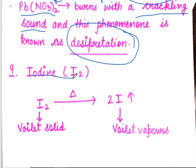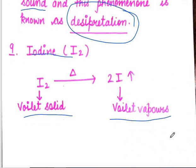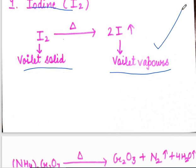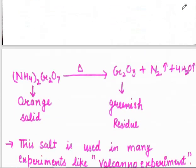Next is iodine. Iodine is a violet color solid substance. Upon heating, it always produces violet vapors.